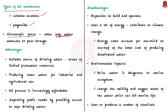Now let us see the general advantages of desalination plants. Firstly, it provides a reliable source of drinking water in areas with limited freshwater resources. Secondly, they can be used to produce clean water for industrial and agricultural uses. Thirdly, they can help to improve public health by providing access to safe drinking water, which is important in areas where waterborne diseases are very common.